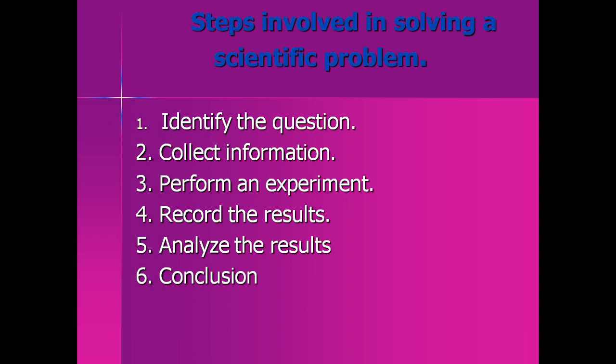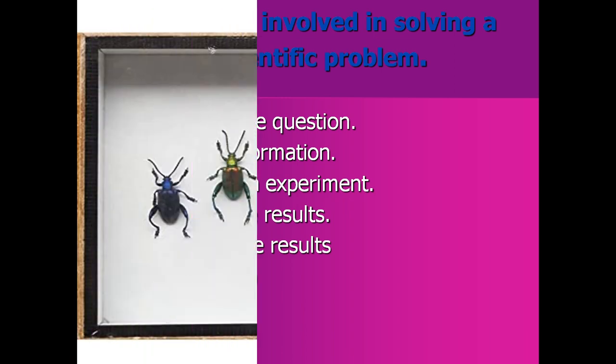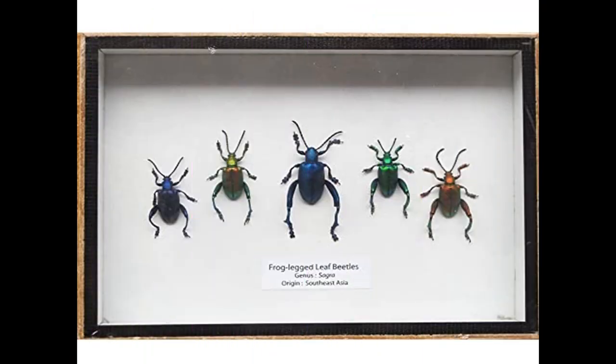Let's consider that there is a question to find out whether all the insects have six legs or not. So we have identified the question - this is the first step. The second step is collection of information. So a scientist will collect different kinds of insects. You can see here in this diagram there are different kinds of insects.